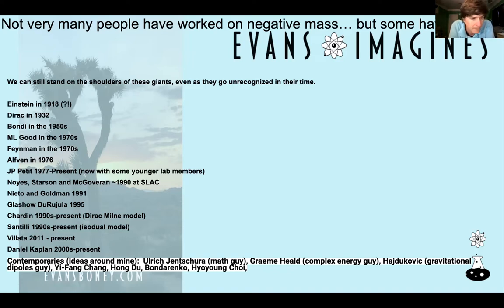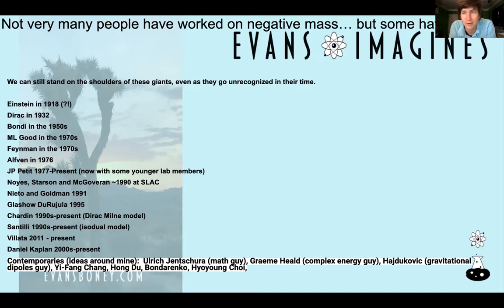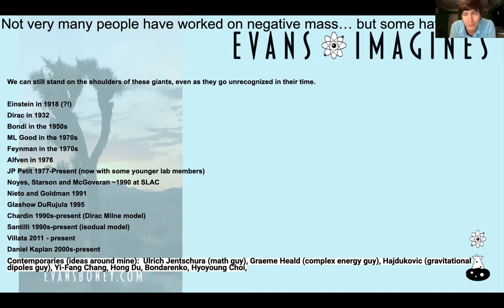Nieto and Goldman 1991 — that was homework last time, so you've read them. Goldman's great, still alive. Glassell, Darugula — we talked about them for homework this time too. Patchwork universe, very well considered, no negative mass. They considered a patchwork of antimatter and matter, but did not consider negative mass antimatter or the origin of dark energy that way.